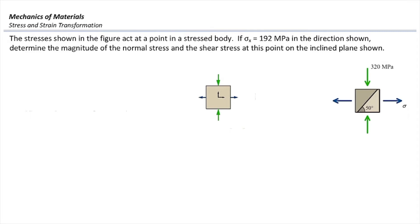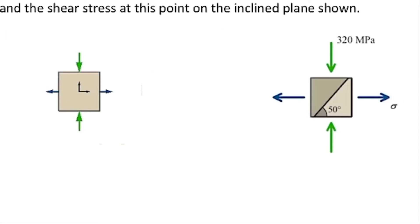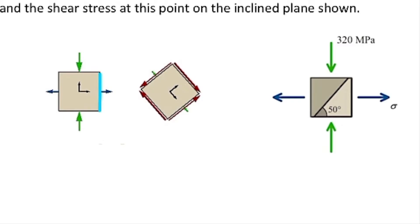Assume that this is the original element that I have. If I want to rotate the right surface and get to that inclined plane, which makes an angle of 50 degrees with the horizontal axis, I need to start from the right surface and get to the plane matching that inclined plane.